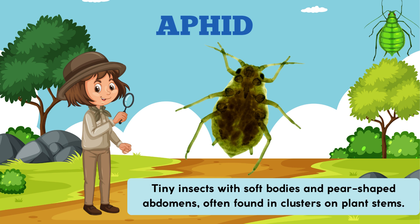Aphid. Tiny insects with soft bodies and pear-shaped abdomens, often found in clusters on plant stems.